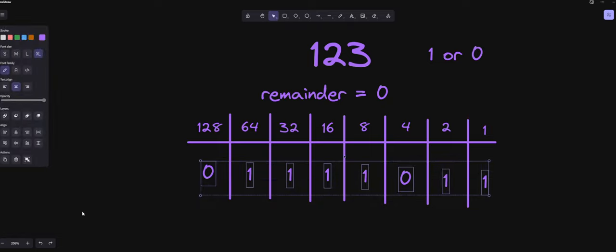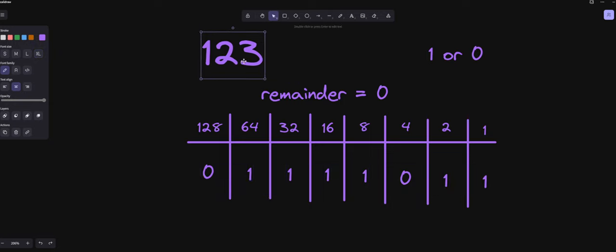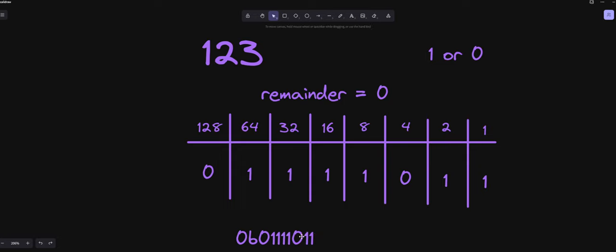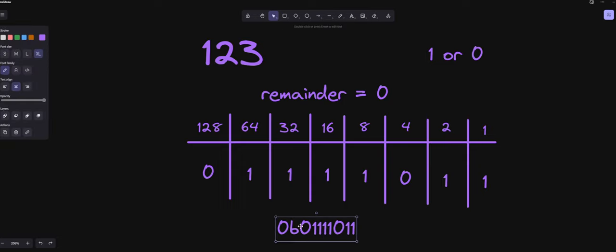And so if we go ahead and we were to write this out normally, what you'd want to do is you want to go ahead and you want to say 0B, which is going to say that this is a binary number. You always want to include that. Otherwise, people don't know what base you're using. And we're going to say 01111011. And that is our 123 written out in binary.